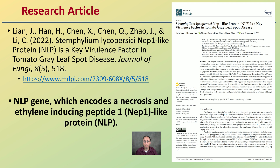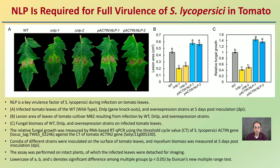Now let's get into some of the genetics. A recently published research article looks at the NLP gene, which encodes for necrosis and ethylene-inducing peptide 1-like proteins, abbreviated NLP. Looking at the data — you may want to pause the video — we have the wild type, gene knockouts, and over-expressing conditions. The graphs representing leaves grown on the plant and then removed for imaging show that gene knockouts resulted in smaller lesion sizes compared to those that were up-regulated, highlighting the importance of this particular gene.